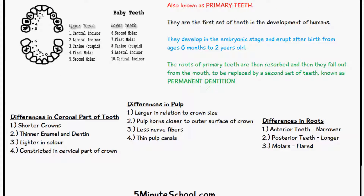The main differences between the deciduous dentition in comparison to the adult teeth — we're going to talk about it in terms of the crown or coronal part of the tooth, the pulp differences, and the differences in the roots. In the coronal part of the tooth, the deciduous dentition crowns are much shorter, the enamel and dentin layers are thinner, and the tooth in general is a lot lighter in colour.